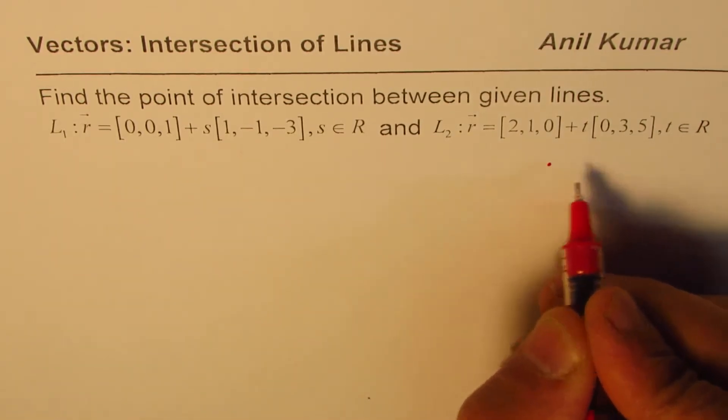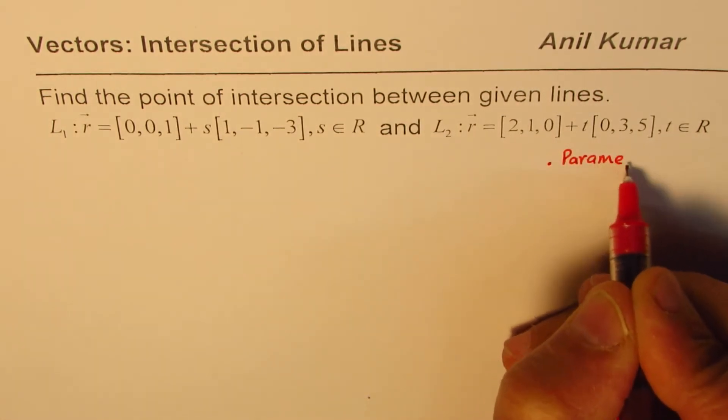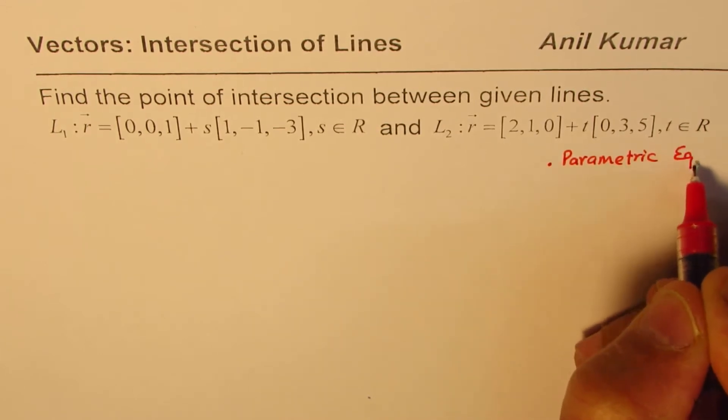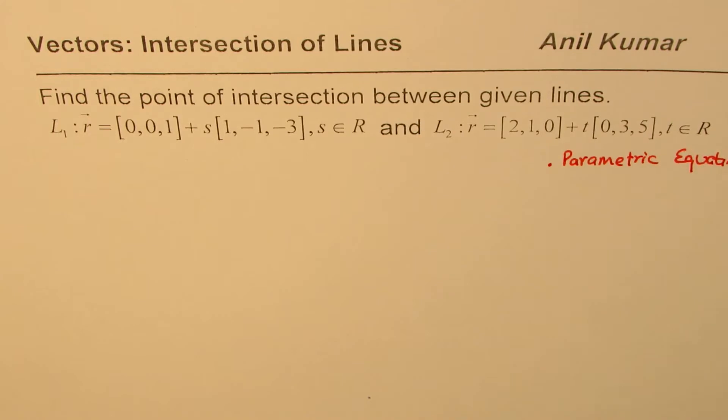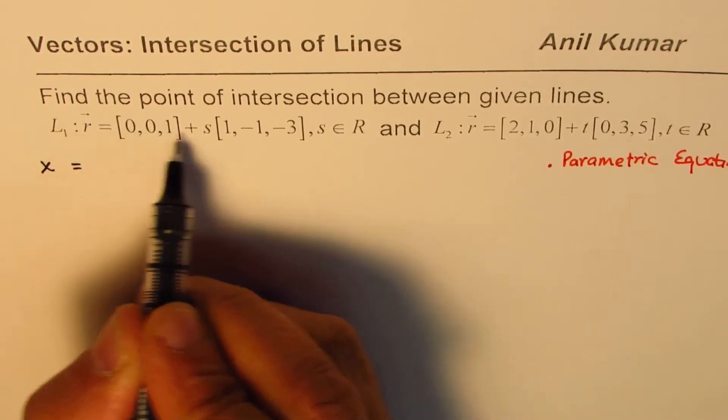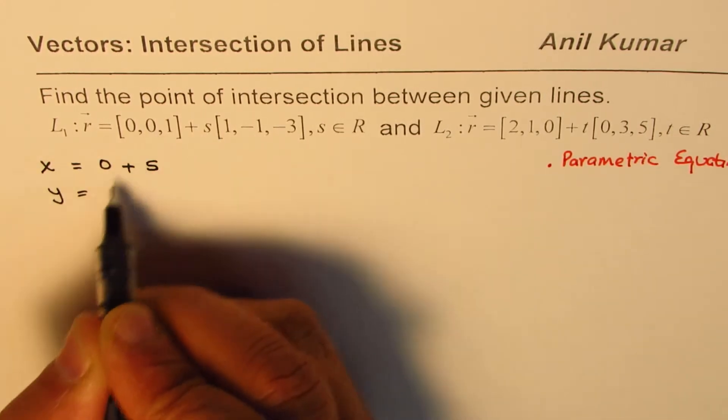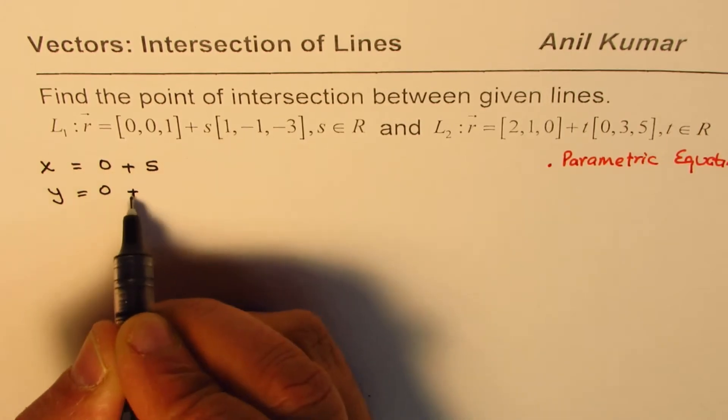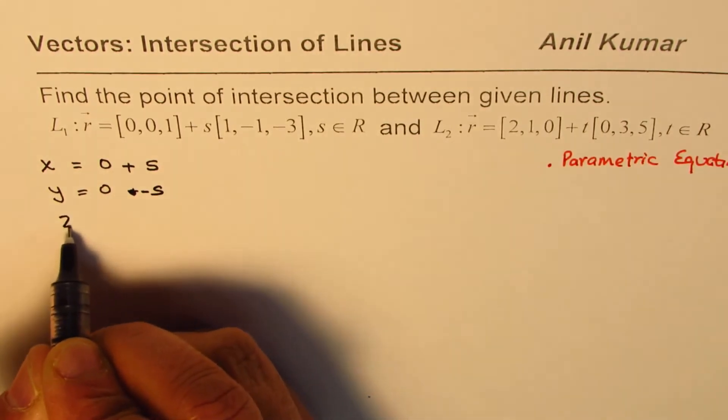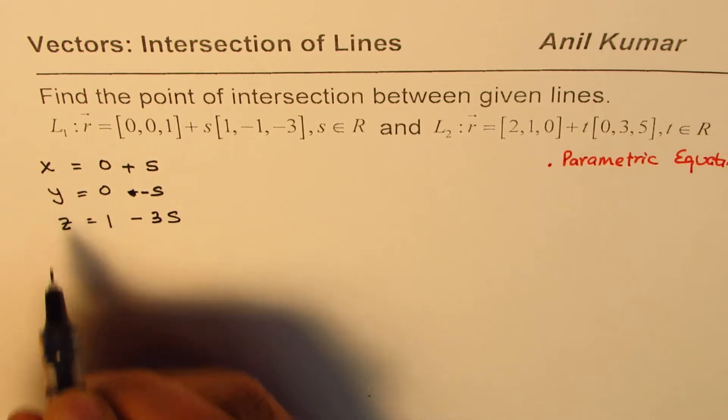Let me write the steps which we should be doing. First step is you need to write parametric equations. So let's write parametric equations for both the lines. For line 1 we can write x equals 0 plus 1s which is s, y equals 0 plus minus 1 so minus s, and z equals 1 minus 3s. So that is for line 1.